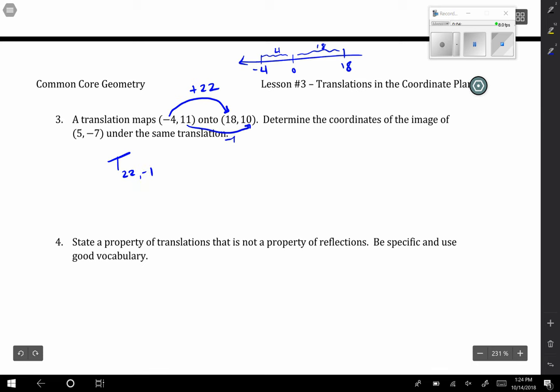It then says determine the coordinates of the image of 5, negative 7 under the same translation. So if I have the coordinate 5, negative 7, and I do this translation, I'm going to get the coordinate 27, because I'd add 22 to 5, and negative 8, because I'd subtract 1 from negative 7. That would be my new coordinate.